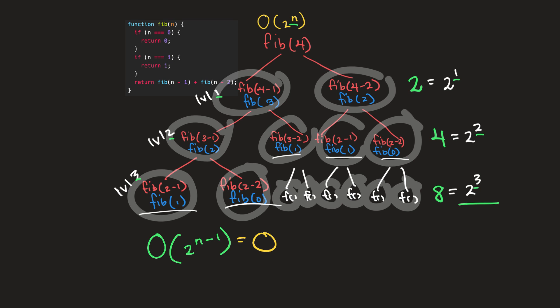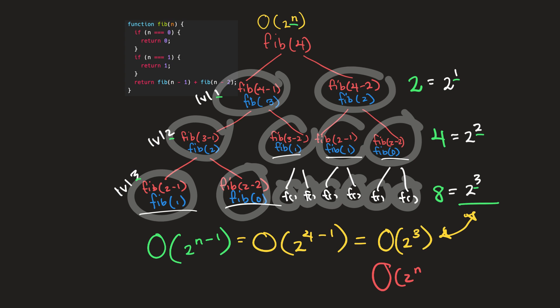If we write this out, you can see it's O of two to the fourth power minus one, which is just equal to O of two to the third power — which is the same as the number of calls made at the third level. And if you remember, in big O we ignore constants. So if in actuality this function is O of two to the n minus one, and we ignore the constants, that means we're going to ignore this minus one — which results in the time complexity being O of two to the n.